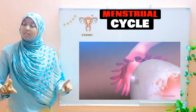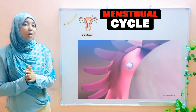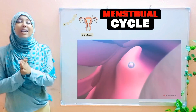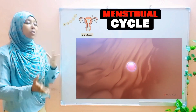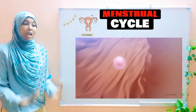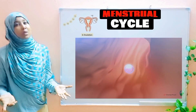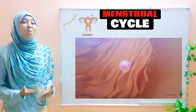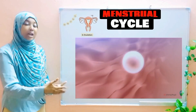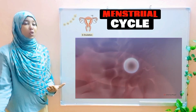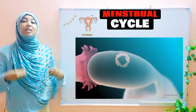We are in the third phase: ovulation. Once the egg cell has been released, it moves into the oviduct, also known as the fallopian tube. Whatever remains of the graafian follicle forms a structure known as the corpus luteum.